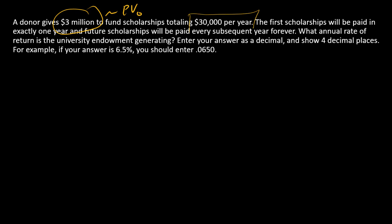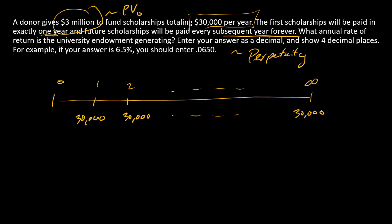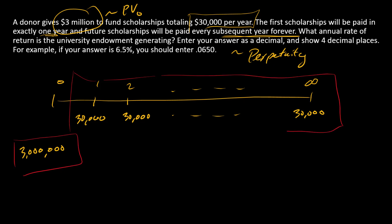We're going to have a series of $30,000 scholarships. Those are going to be paid annually, starting one year from now, and they will be paid forever. So the structure has a name — it's a perpetuity. These are funded with a one-time cash donation of $3 million, which is the present value of the perpetuity.